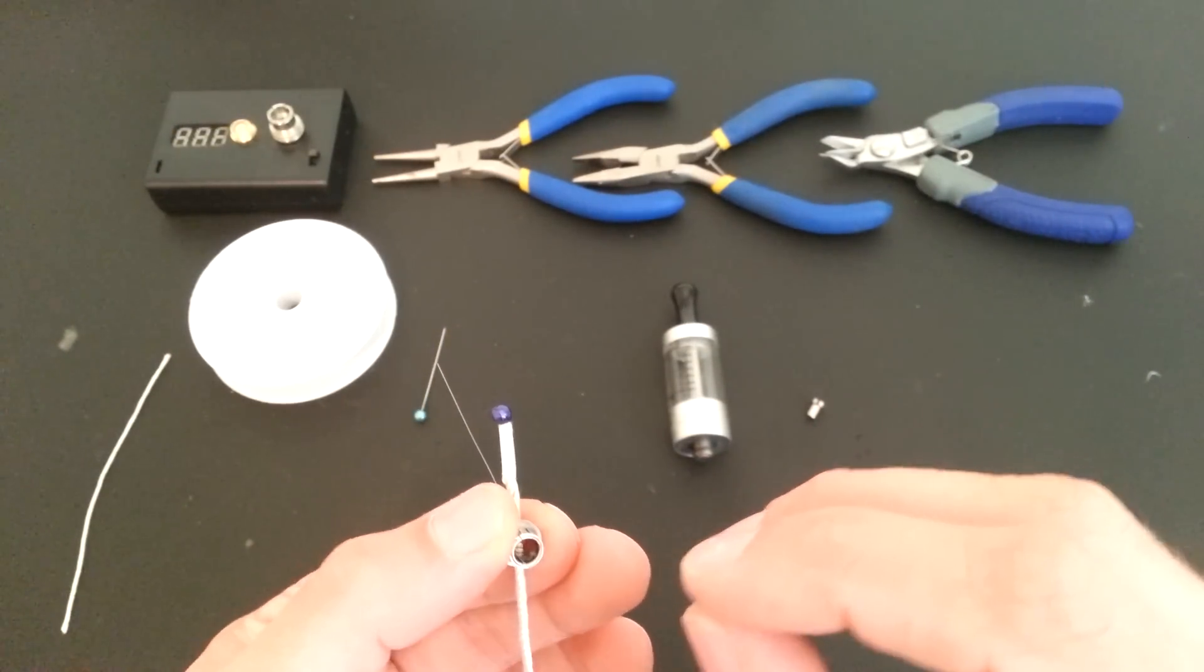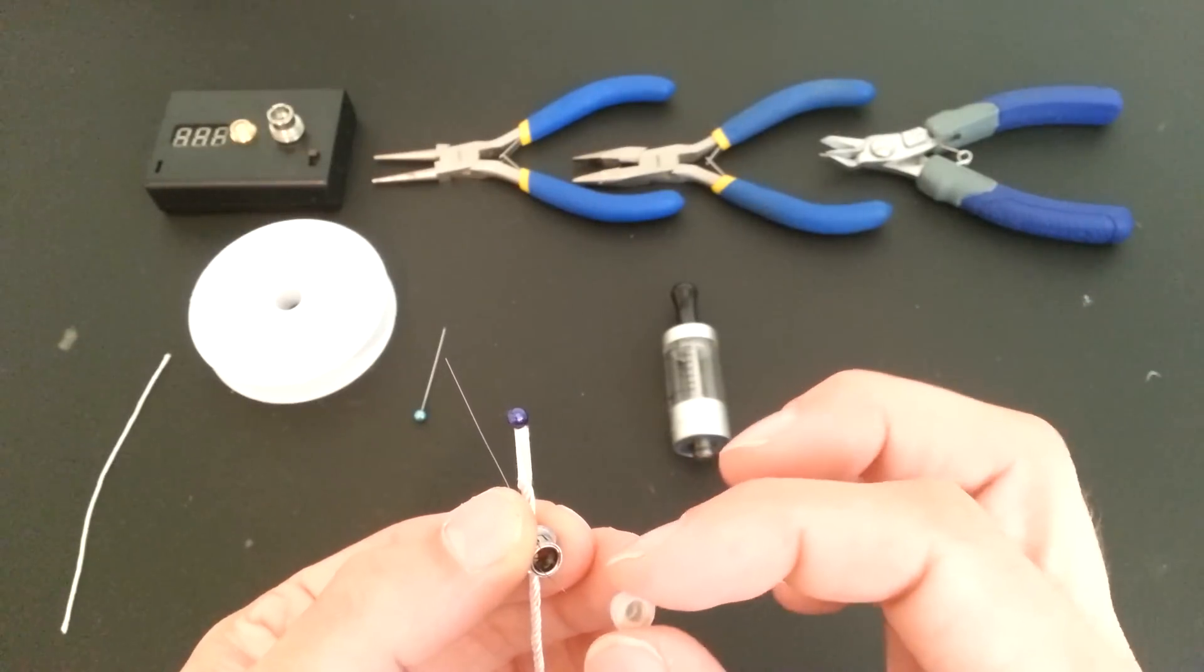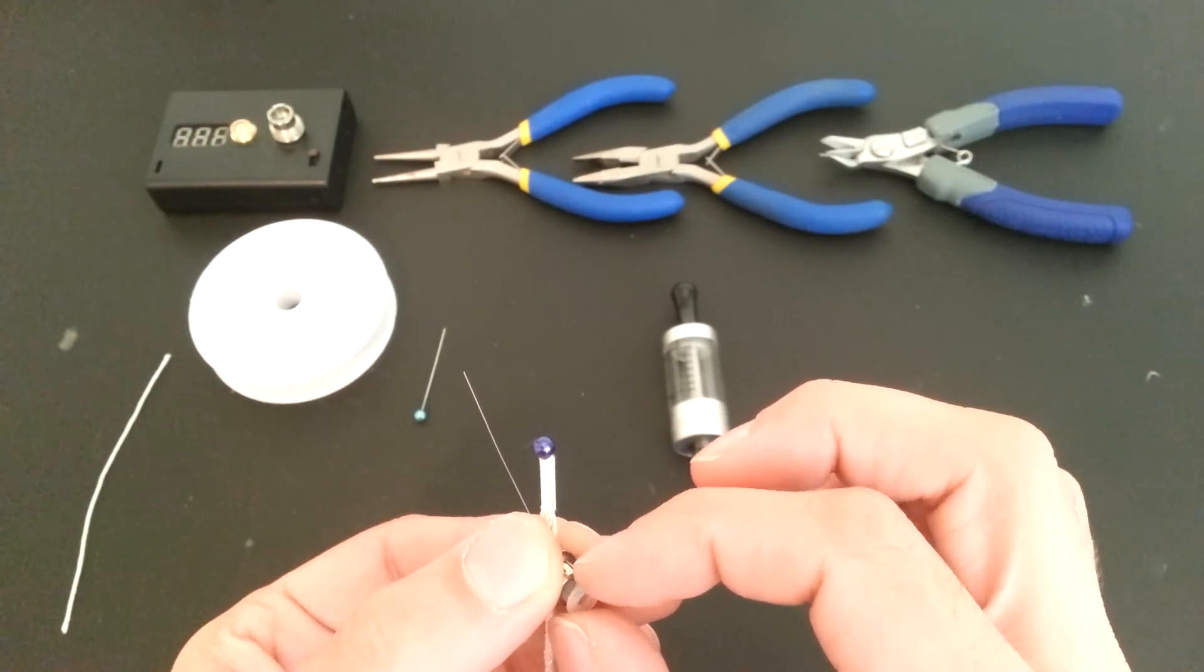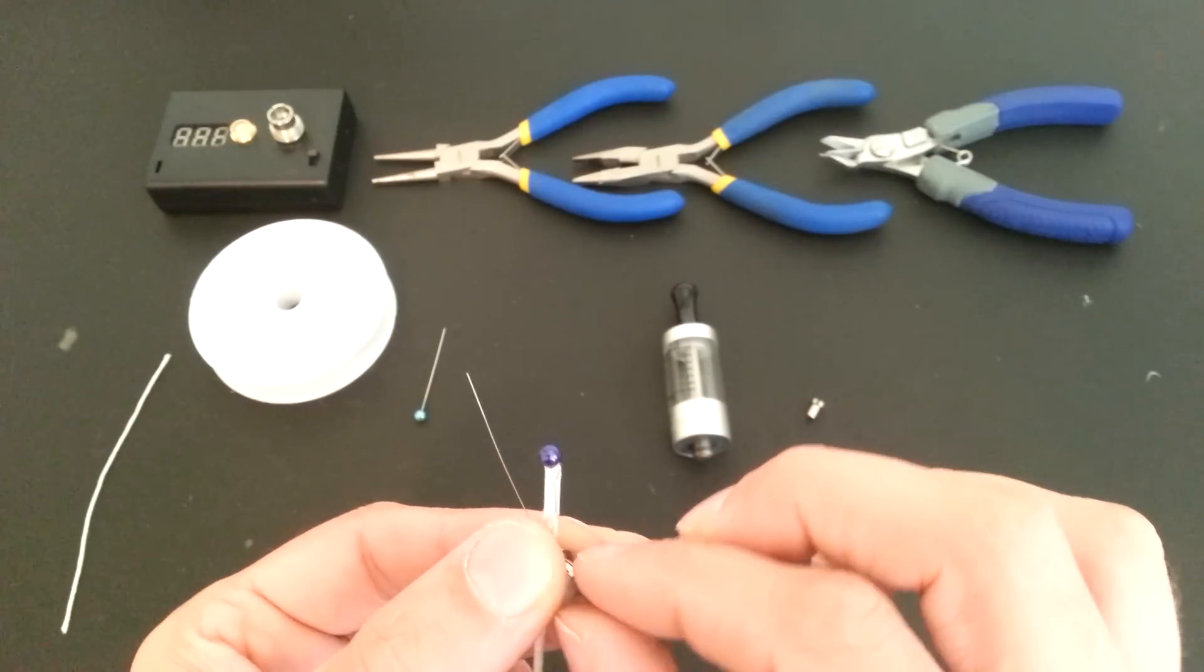Going to continue holding that in place, take our silicone grommet, feed the opposite wire through the center of the silicone grommet, go ahead and get that grommet in there nice and snug.